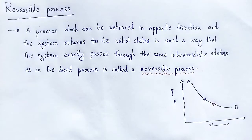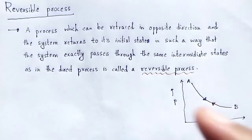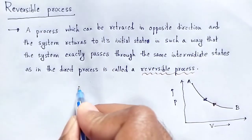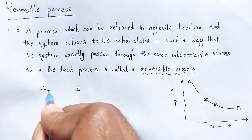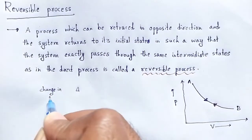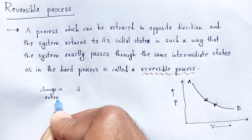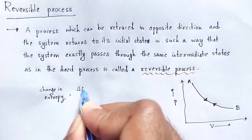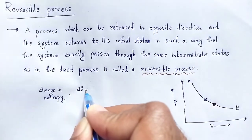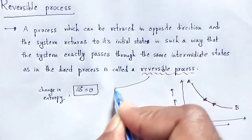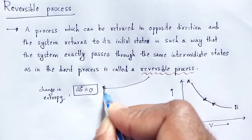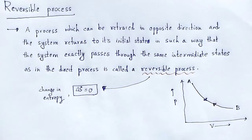According to statistics, in a reversible process the change in entropy, ΔS, will be equal to zero. There are also various conditions that must be obeyed for a particular reversible process.